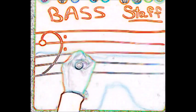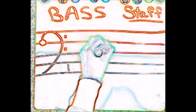Let's start by creating a staff. A bass staff. A staff has five lines and four spaces.